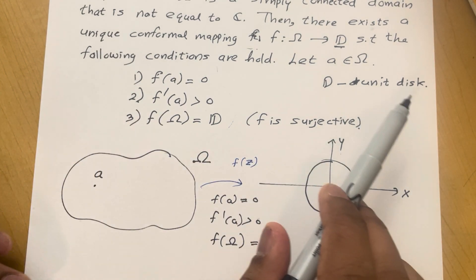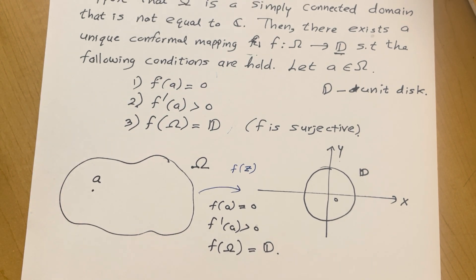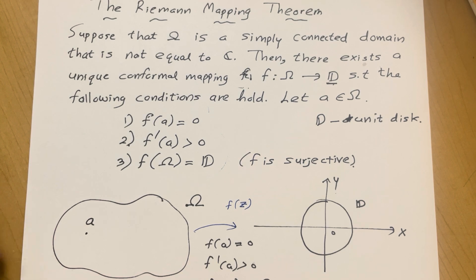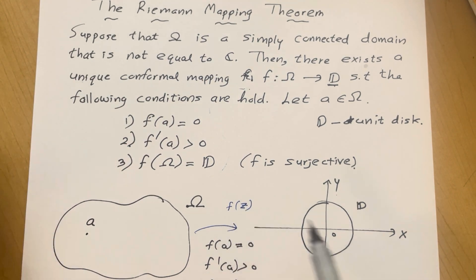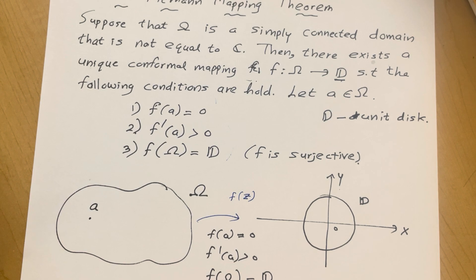And this Riemann mapping theorem is widely used in many places in complex analysis, for example in geometric function theory. This Riemann mapping theorem is widely used. For example when we are defining the conformal radius of a domain, we are defining that in terms of this map by using the Riemann map. So I'm planning to discuss some applications of Riemann mapping theorem in one of my next videos.